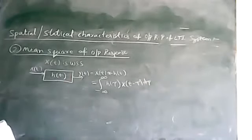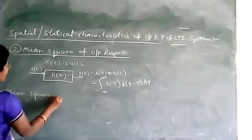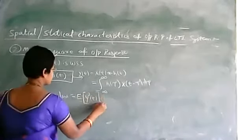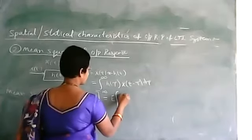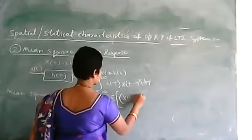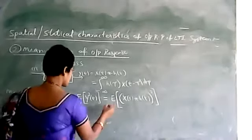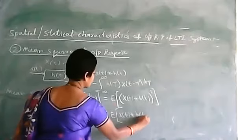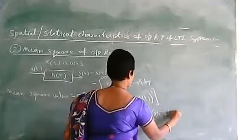Now we are finding the mean square value of the output response, that is the expected value E[y²(t)]. The mean square value is nothing but the expected value of y squared of t. So it can be written as the expected value of y(t) convolved with h(t), squared — that is E[x(t)*h(t) · x(t)*h(t)].